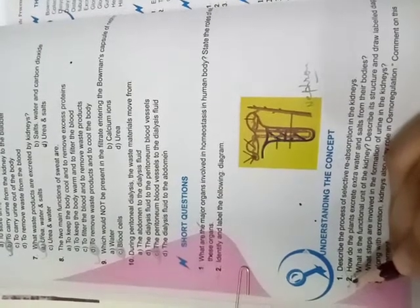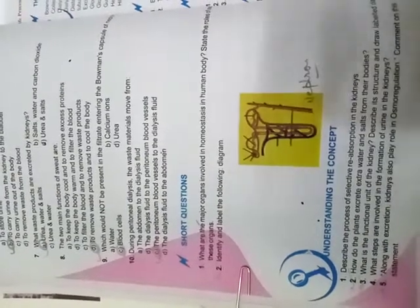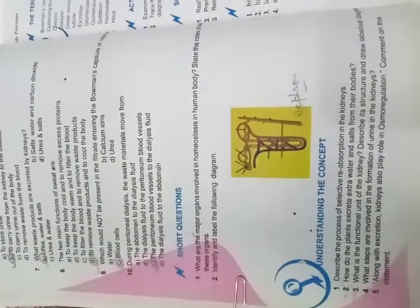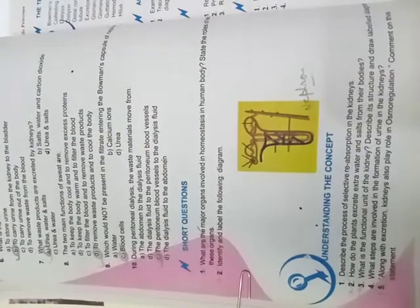Let's go back to the exercise. Short questions 1 and 2 will be completed. There are two long questions. Long question: How do plants excrete extra water and salt from their body? We have read this topic. Long question number 3: What is the functional unit of the kidney? Describe its structure and draw a labelled diagram. This is what I have studied today.